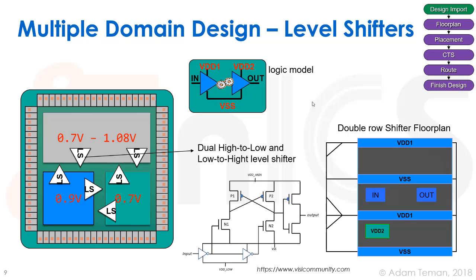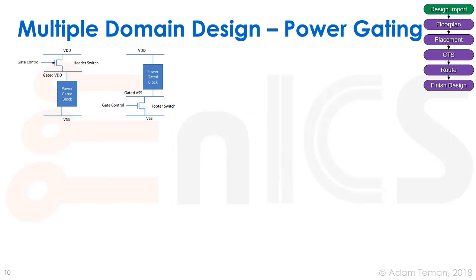Another key aspect of multiple voltage domain design is power gating — turning off a block to reduce leakage when it's not in use. This is done with a header switch or footer switch: a single transistor controlled by a signal that cuts off the path from VDD to ground. The switch must be very large to avoid adding significant resistance on the path to the standard gates inside the block.